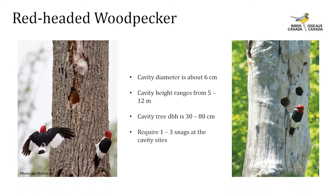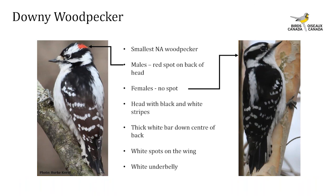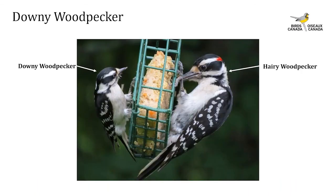Our smallest and most widespread woodpecker in North America is the downy woodpecker. Males have a red spot on the back of their head; females do not. They have a black and white striped head, white spots on their wings, a thick vertical white bar down the center of their back, and a completely white belly. The hairy woodpecker and downy woodpecker are sometimes confused — their markings are very similar, but the hairy woodpecker is about twice the size and has a large, thick, stout, long bill.